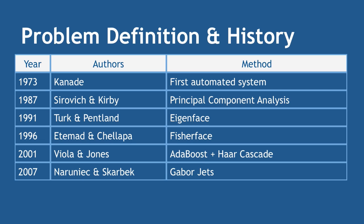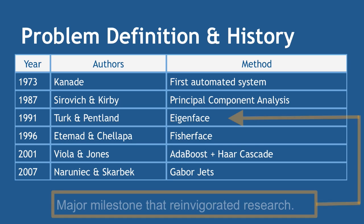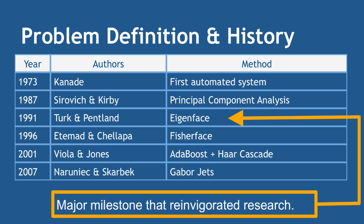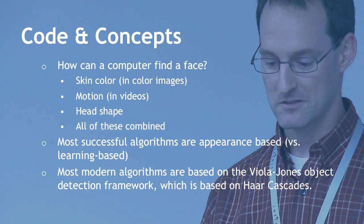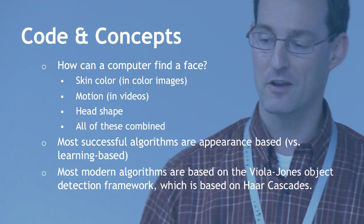There have been a number of attempts to really learn about facial recognition, with a lot of research starting in 1973 when the first automated system happened. Principal component analysis — Eigenface — in 1991 was a major milestone, and Fisherface builds on that. Then in 2001, two researchers, Viola and Jones, came up with a way of detecting faces using something called AdaBoost and a Haar cascade, which is what we're going to talk about tonight. There's also a more recent technique called Gabor jets.